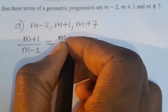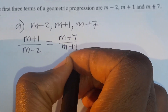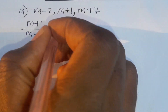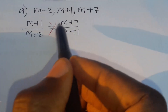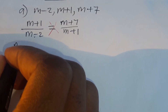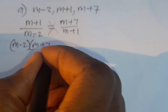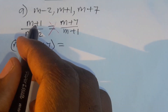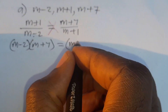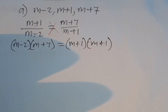So we set up: m plus 1 over m minus 2 is equal to m plus 7 over m plus 1. At this stage we cross multiply, giving us m minus 2 times m plus 7 is equal to m plus 1 times m plus 1.